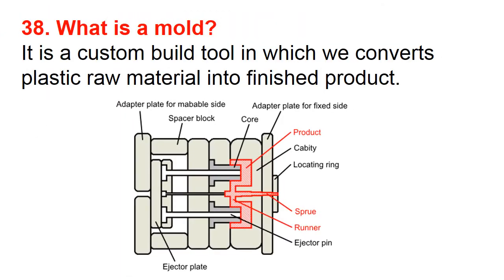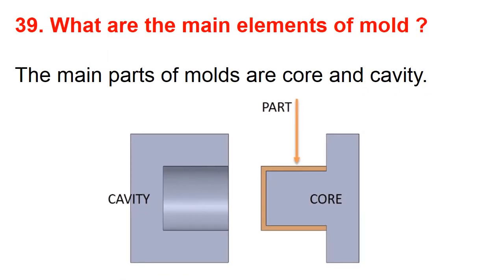Question number thirty-eight: What is a mold? It is a custom-built tool in which we convert plastic raw material into a finished part. Question number thirty-nine: What are the main elements of a mold? The main parts of a mold are core and cavity.